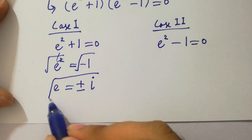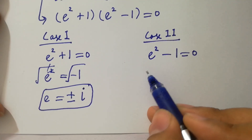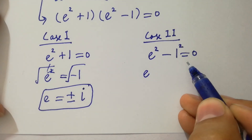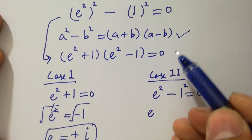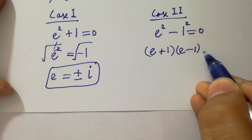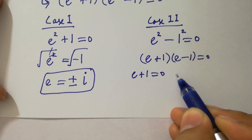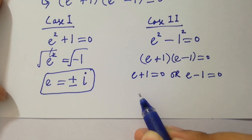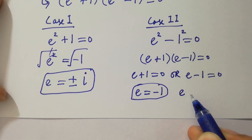So we have two solutions here: plus i and minus i. From the second case, e squared minus 1 squared equals 0, where 1 squared is 1. Applying the formula a squared minus b squared equals a plus b times a minus b, it becomes e plus 1 times e minus 1 equals 0. So e plus 1 equals 0 or e minus 1 equals 0, giving e equals minus 1 and e equals plus 1.